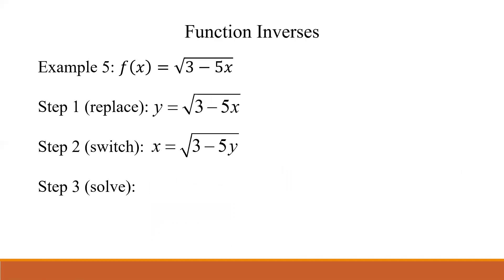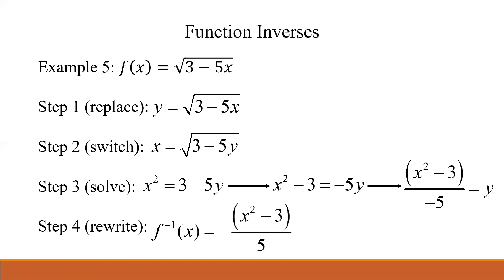We're going to replace the f(x) with y. We're going to switch the x and y values. We're going to solve. Now, what's the first thing we're going to do? If I want to get y by itself, what's the very first thing? In this case, we've got to undo that radical. How do you undo a square root? Well, you square both sides. So you've got x² = 3 - 5y. Continue getting y by itself. So x² - 3, and then divide by the negative 5. Don't forget that negative sign.